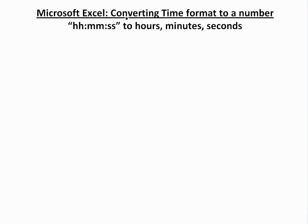Hi, it's Aaron of Math Easy Solutions. We're going to discuss something pretty useful: in Microsoft Excel, we're going to convert the time format to a number — specifically, how to change a time format like hours, minutes, seconds into cumulative hours, cumulative minutes, total seconds, and so on.